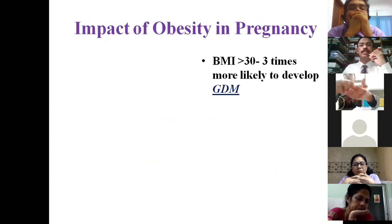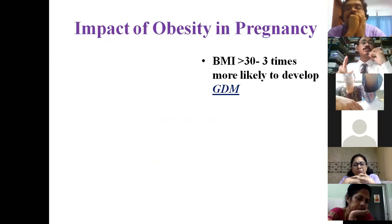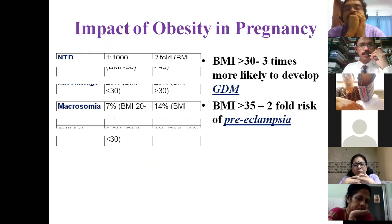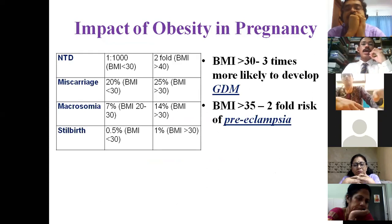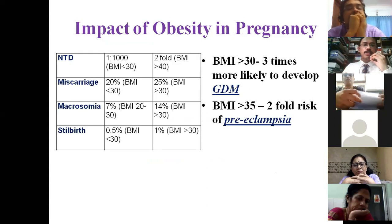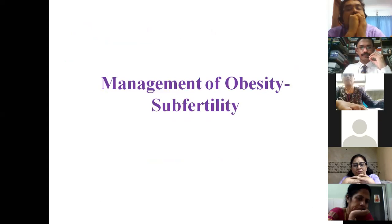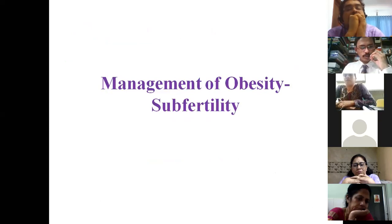There is also increased risk of gestational diabetes mellitus, which is much more prevalent in Indian women, increased risk of preeclampsia, and obesity is a risk factor for congenital anomalies particularly neural tube defects, apart from macrosomia and stillbirth.